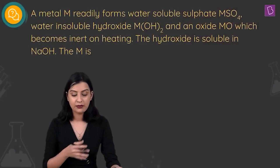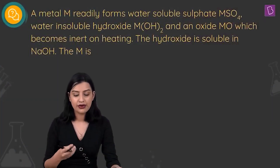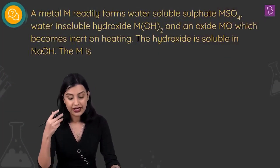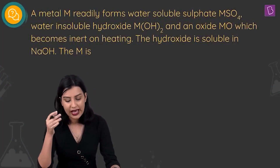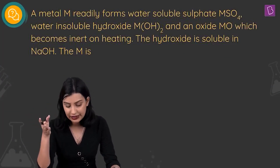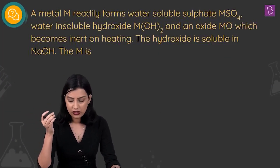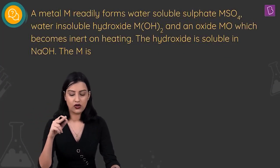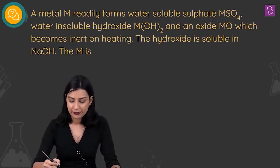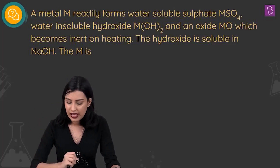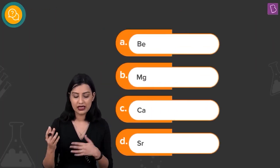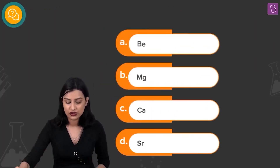Here they're saying that metal M readily forms a water-soluble sulfate, a water-insoluble hydroxide, and an oxide MO which becomes inert on heating. Also, the hydroxide is soluble in NaOH. They're asking what M is, and the options are beryllium, magnesium, calcium, and strontium.